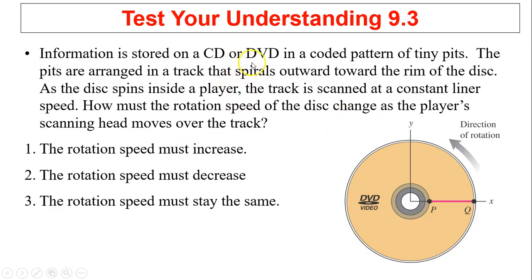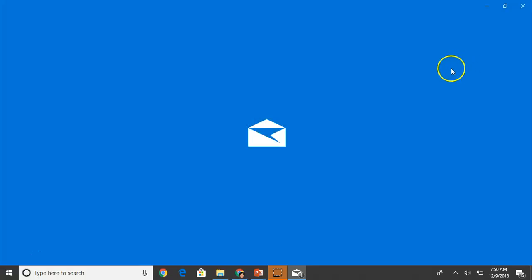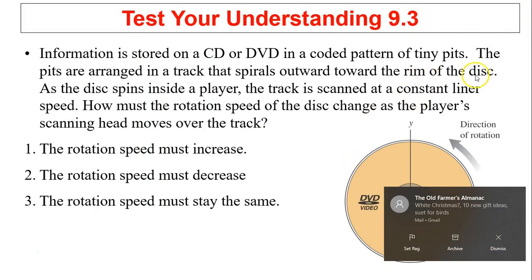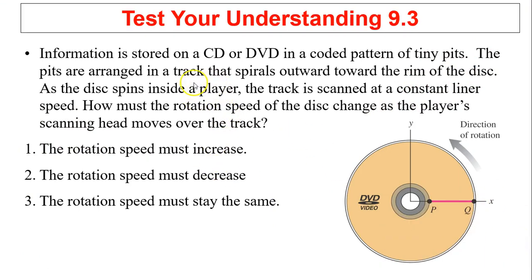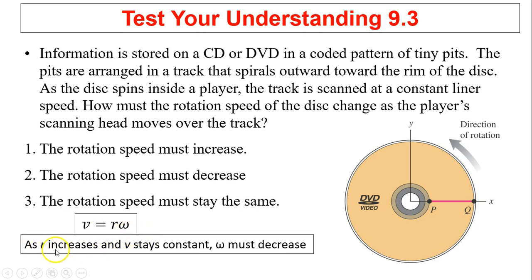Check your understanding. Information is stored on a CD or DVD in a coded pattern of tiny pits. The pits are arranged in a track that spirals outward toward the rim of the disc. As the disc spins inside a player, the track is scanned at a constant linear speed. How must the rotation speed of the disc change as the player's scanning head moves over the track? What it tells us is the speed, the linear speed, is constant. So what is the choice? Let's see. V equals R times omega. So as R increases, as you're spinning outward, R has to increase. V is constant, that means omega must decrease. So the answer is 2.